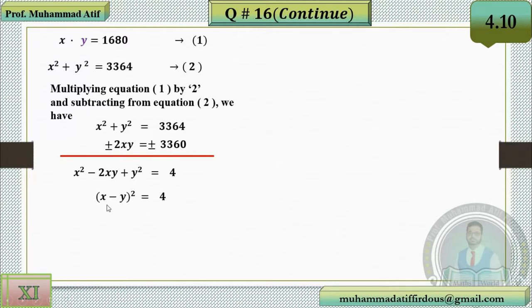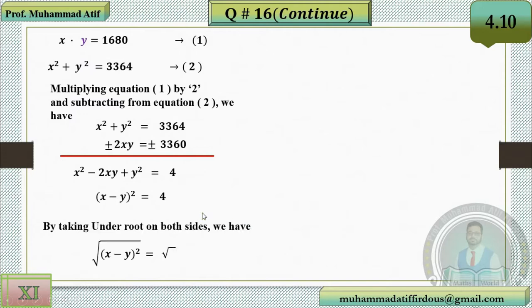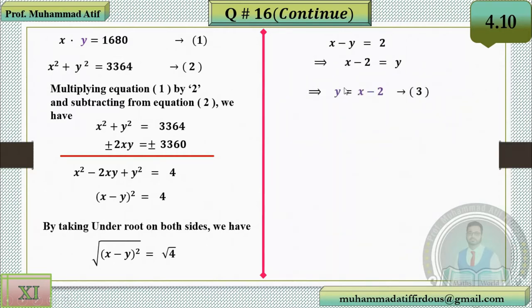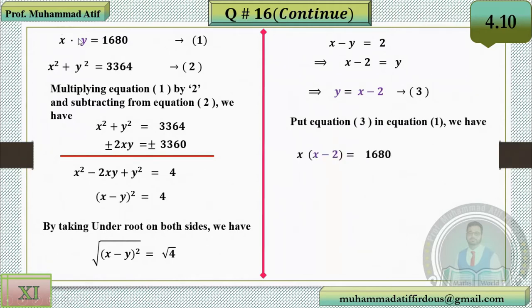Using the formula (a − b)² = a² − 2ab + b², the left-hand side becomes (x − y)² = 4. Taking the square root of both sides: x − y = 2, so y = x − 2.